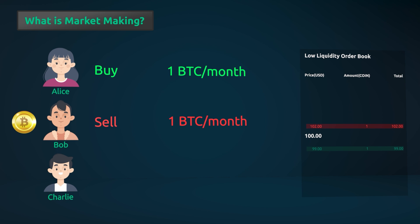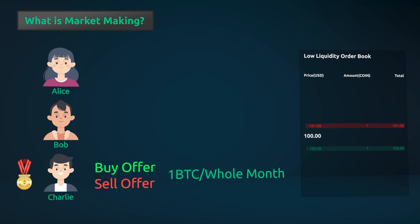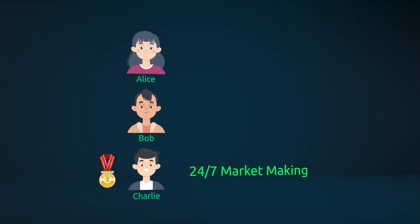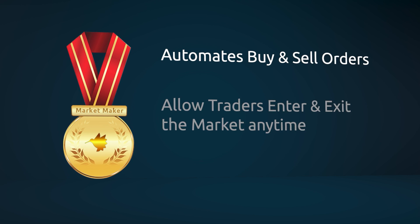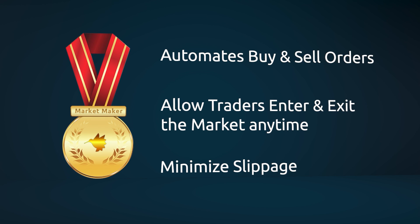Charlie decides to improve this market's liquidity by acting as a market maker. For the whole month, Charlie keeps up a buy offer until Bob decides to sell his mining rewards. When that happens, he immediately creates a new buy offer to wait for Bob, then adds a small profit margin — also known as spread — and creates a sell offer that he keeps open for a whole month until Alice appears to buy. That way, Charlie, as a market maker, improves the liquidity of this market by allowing Bob and Alice to execute their trades at any moment they want. Market makers provide a service by constantly creating buy and sell offers, allowing other participants to enter and exit positions at any moment at a fair market price. Without market makers, liquidity would be way worse across all markets.